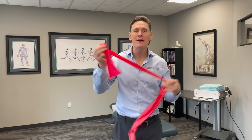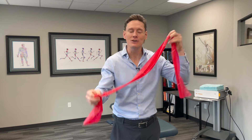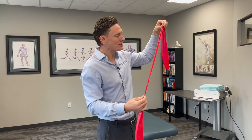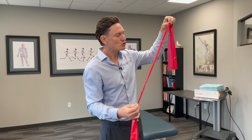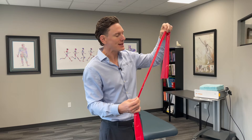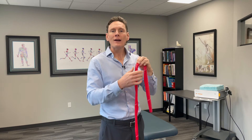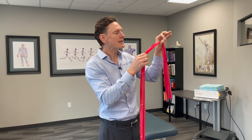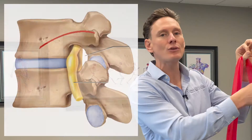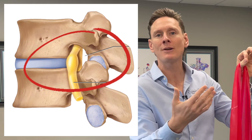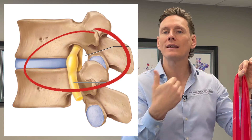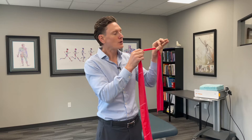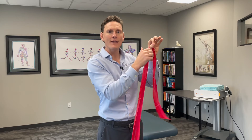A healthy nerve has the ability to do two things. They can stretch or elongate a little bit — pretend this is a healthy nerve, you can just see how that stretching is happening. They also have the ability to slide through or past other tissues, especially in the spine. There's an area called the intervertebral foramen, or the IVF, where the nerve leaves the spine, and a healthy nerve should be able to move in there.